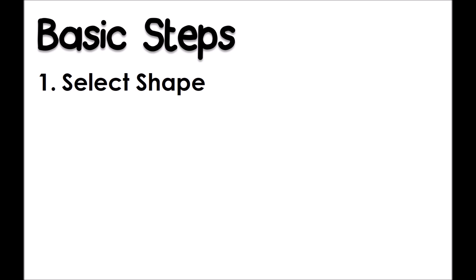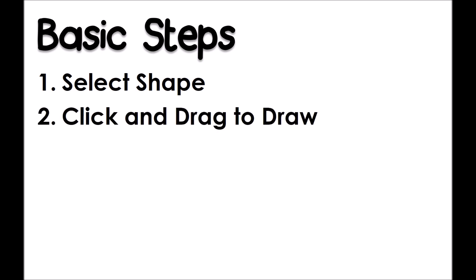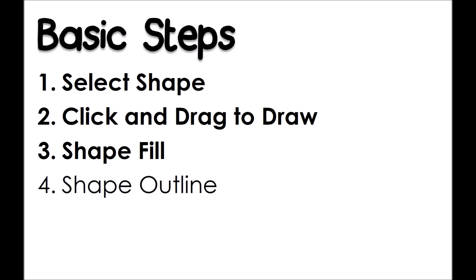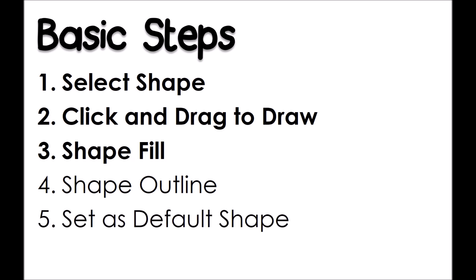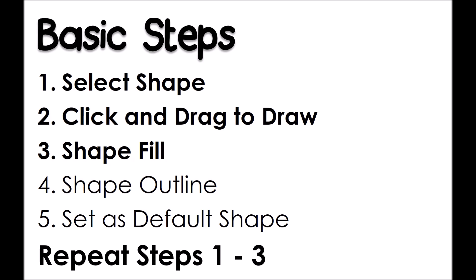Five basic steps are all you need to draw with Microsoft PowerPoint. Step one is to select shape. Step two is to click and drag to draw. Step three is to add colour using shape fill. Step four is to add an outline using shape outline. Step five is to set as default shape. Now all you have to do is to repeat steps one to three and you can draw anything that you imagine possible.